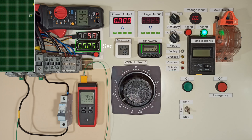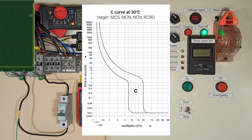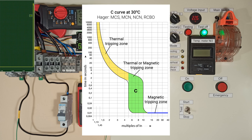The tripping time of circuit breakers depends on the current, and it can be calculated by knowing the curve. Characteristic graphs have three zones: tripping by the thermal element, tripping by the magnetic element, and a transition zone where tripping may occur either by the thermal or the magnetic element.